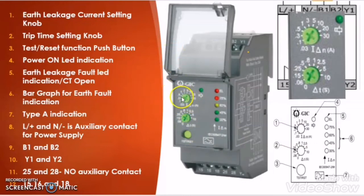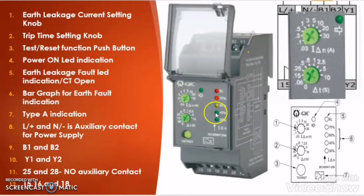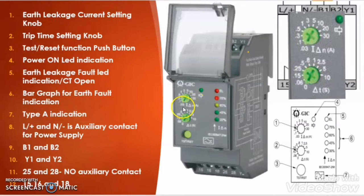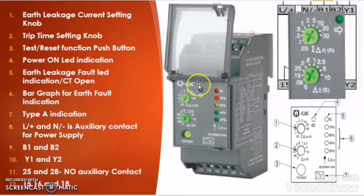To better understand the earth leakage relay, let us understand its important parts. The first thing which you will find on the earth leakage relay is an earth leakage current setting knob. With the help of this knob you can adjust the current rating of the earth leakage relay. You can set the earth leakage relay from 30 mA to 30 Ampere. Suppose you set the knob at 10 Ampere — whenever the earth leakage relay senses earth leakage current with the help of CBCT more than 10 Ampere, it will give command to the circuit breaker or contactor to trip.